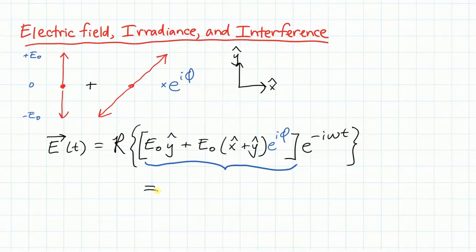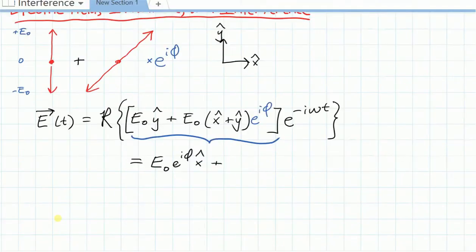So what's that equal to? I can group the x and y terms separately. For x, I've got e-naught e to the i phi times x-hat. And for y, I've got e-naught, this term gives me a 1, this term gives me an e to the i phi, y-hat.